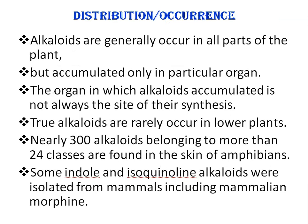Next is the distribution or occurrence of alkaloids. Alkaloids were isolated from many different terrestrial and marine sources, including amphibians, arthropods, mammals, insects, sponges, fishes, fungi, bacteria, and of course Homo sapiens.